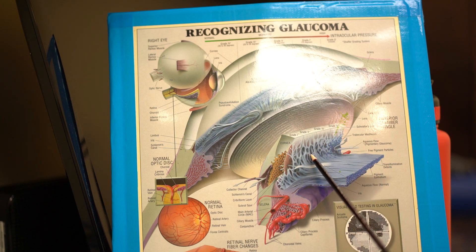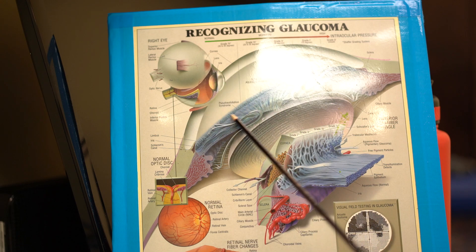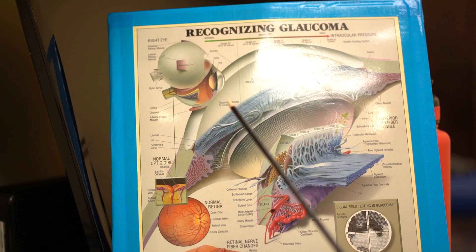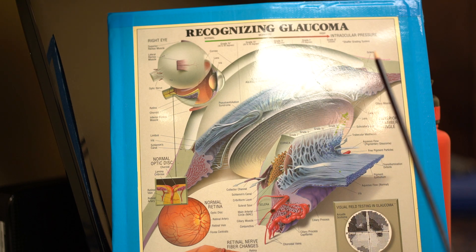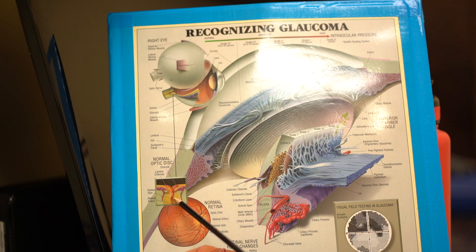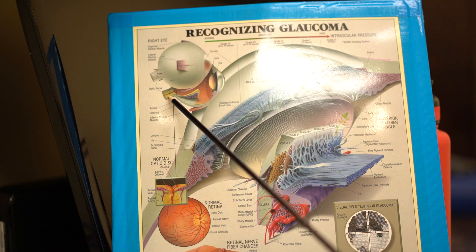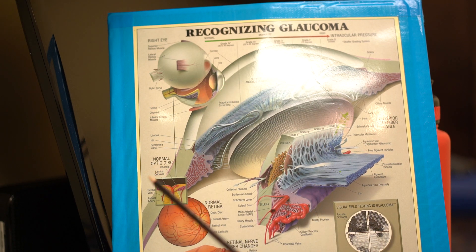Sometimes people's trabecular meshwork gets clogged up. We're not really sure exactly why that happens, but when it does, there's nowhere else for this fluid to go. It's a closed system — a closed eyeball. So the pressure starts to rise and builds up, which subsequently causes damage right back here on the optic nerve. This is the edge of the optic nerve right here, and it basically goes from the eyeball all the way to the back of the brain for processing — that's how we can tell what we see.